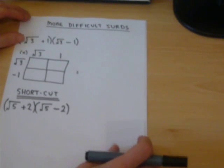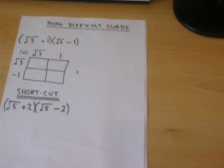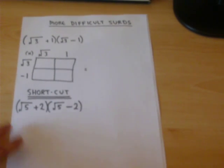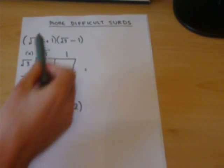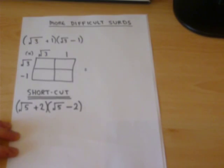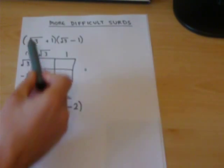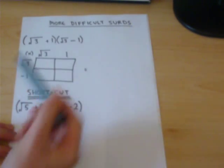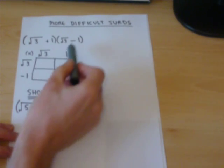We can also do more difficult multiplying, whether it is a combination of additions, subtractions, or different expressions. Now, when you multiply together two brackets, one useful trick is to use the grid method. We have a root three and a one, a root three and a minus one.